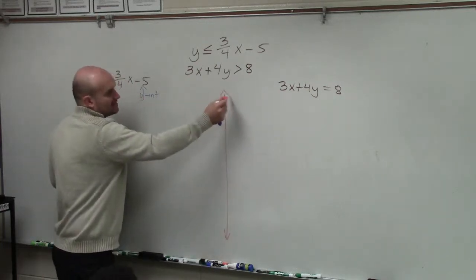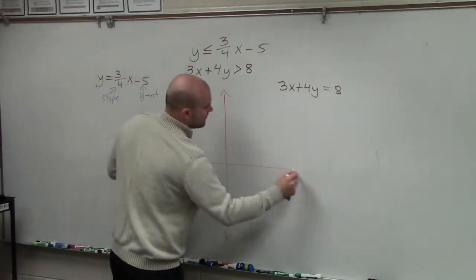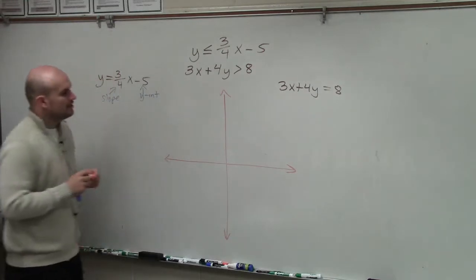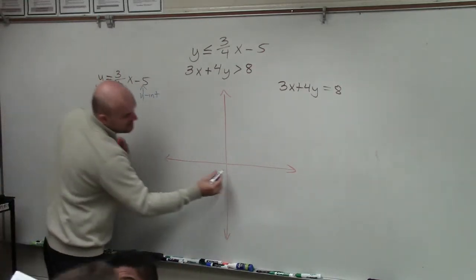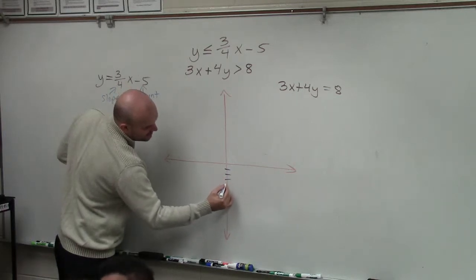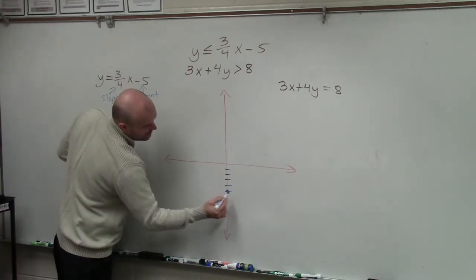So on my x and y-axis that I have here, the first thing I'm going to do is I'm going to plot my y-intercept, which is negative 5. So I go down to negative 5. 1, 2, 3, 4, 5. And I make a point.